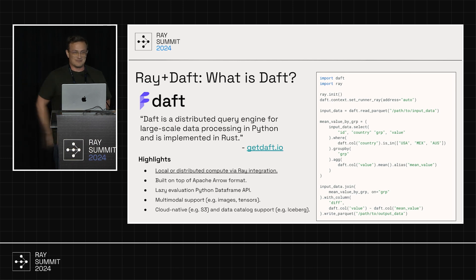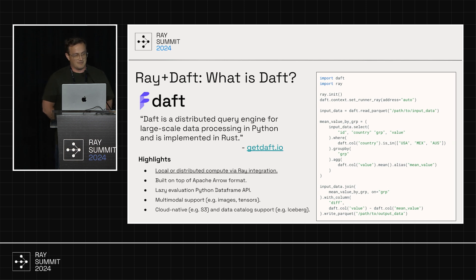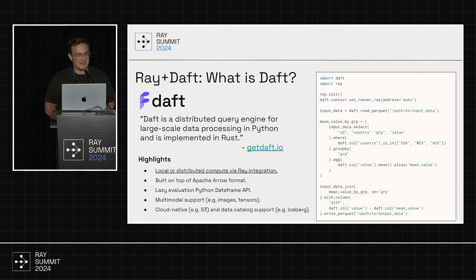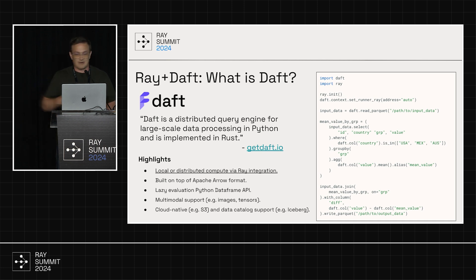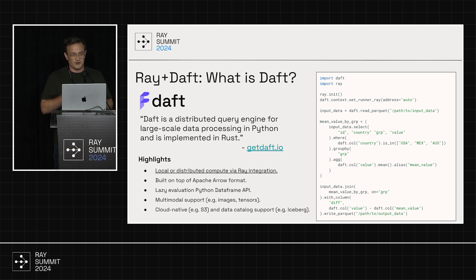From their website: Daft is a distributed query engine for large-scale data processing in Python. Under the hood it's implemented in Rust. Its primary integration is Ray to do distributed processing. Some highlights: it uses Apache Arrow format under the hood, it's a lazy evaluation DataFrame API, it targets multimodal support, and it has cloud-native and data catalog support like Apache Iceberg. The API itself feels very much like Spark, so if you had to transition over, it's not going to be a big surprise — though it's not word-for-word from a Spark API; they've made changes they felt were best for their API.